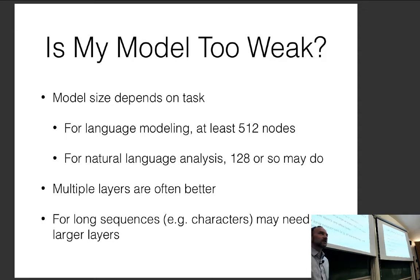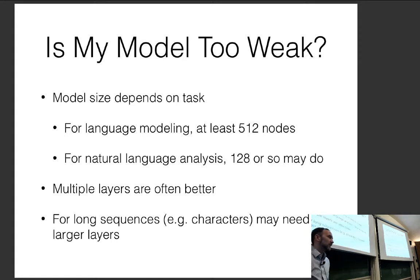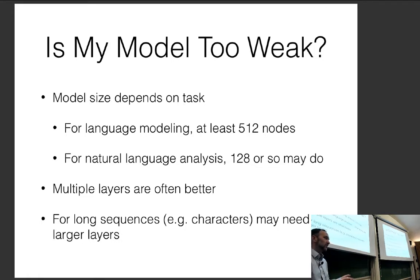Width levels off faster than depth in terms of improvement. Theoretically, a single hidden layer multilayer perceptron with sufficient width can calculate any function, but that doesn't mean much because you actually need to learn it from data.